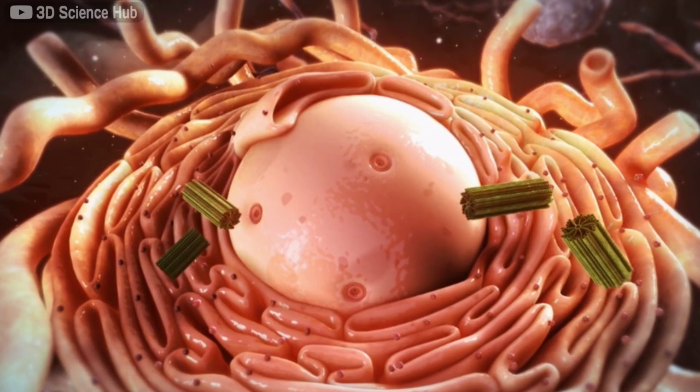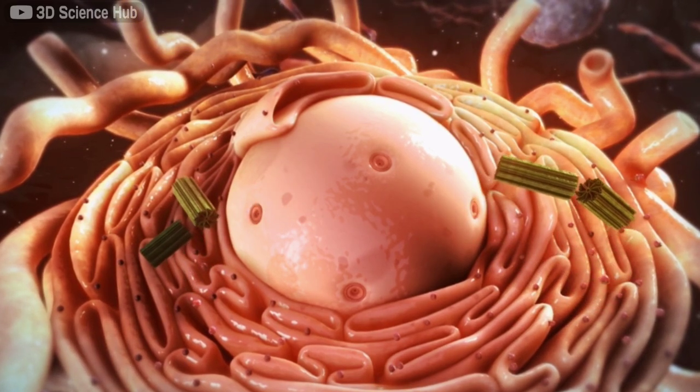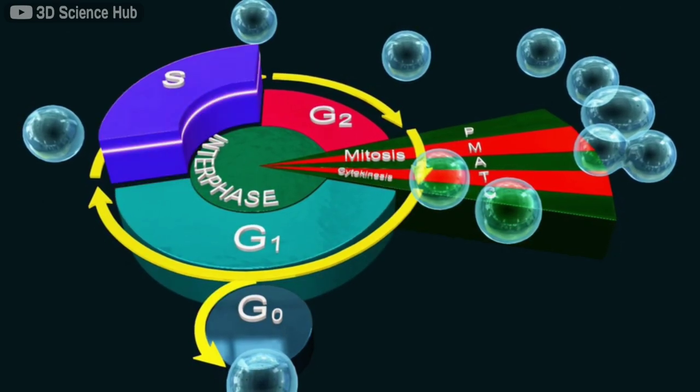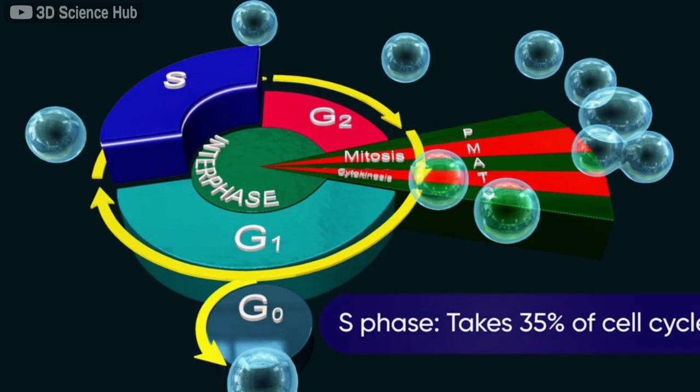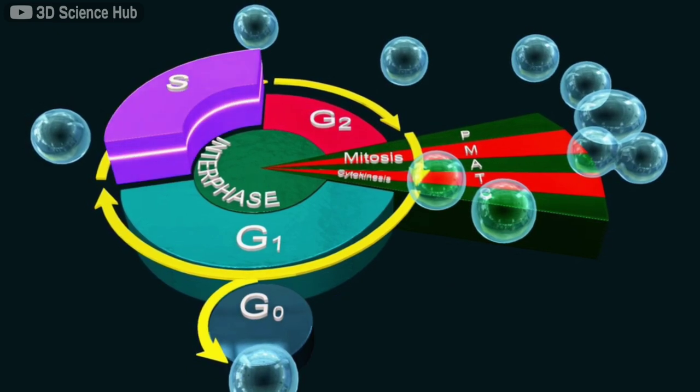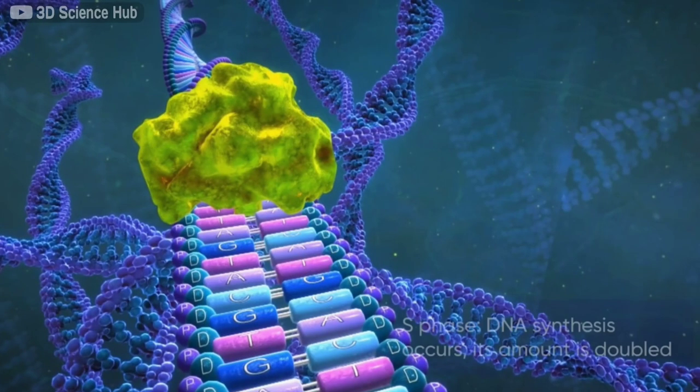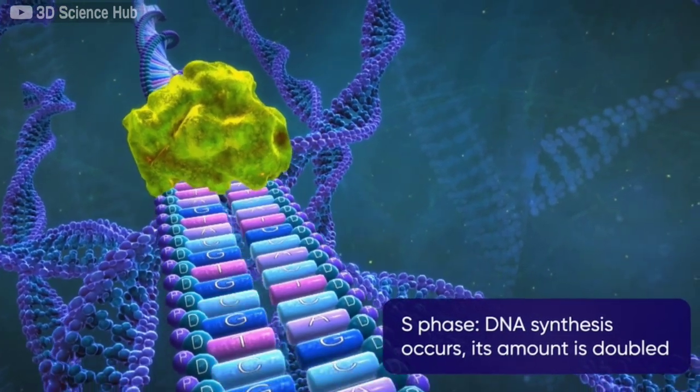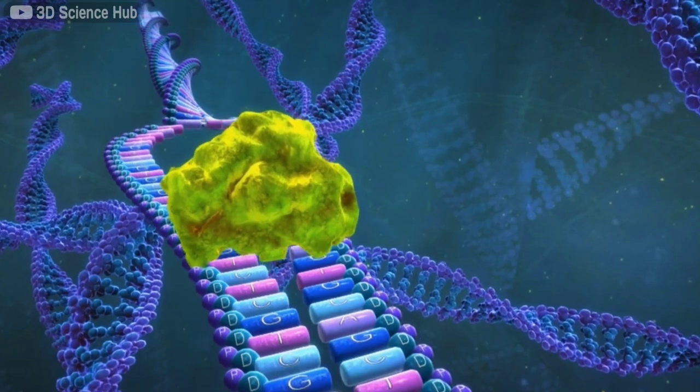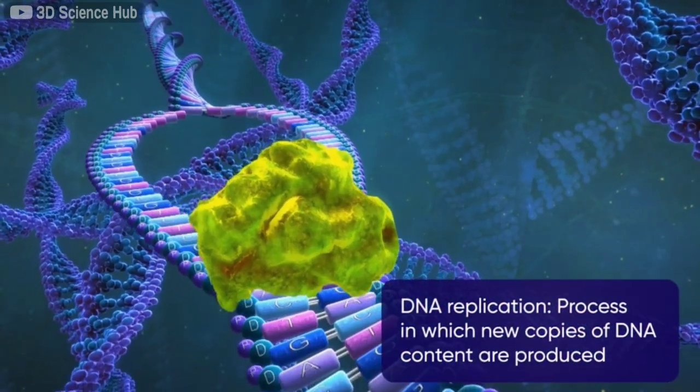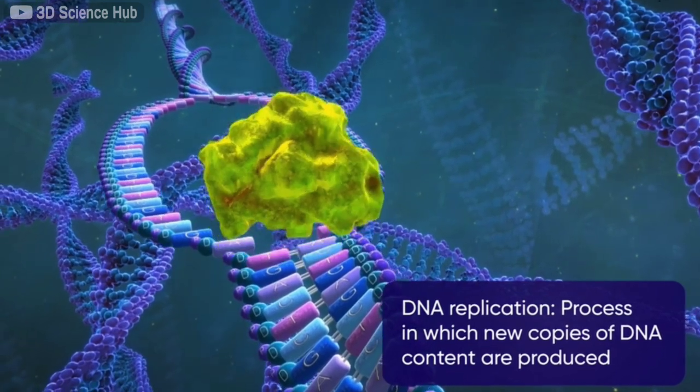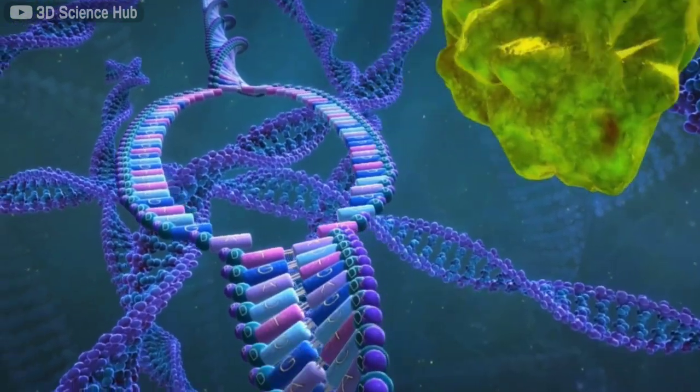The second stage of the interphase is called the S phase. This phase takes 35% of the cell cycle, making it the second longest. During this period, DNA is synthesized, doubling its amount. We can define DNA replication as the process by which two identical replicas of DNA are produced from an original DNA molecule.